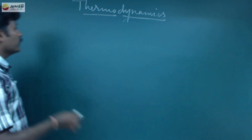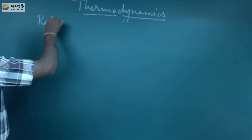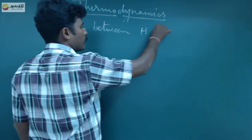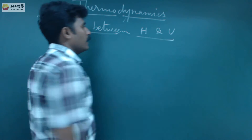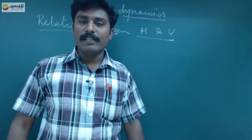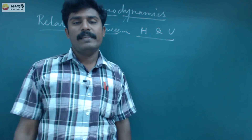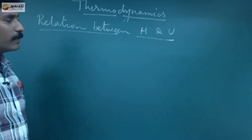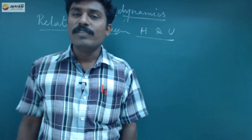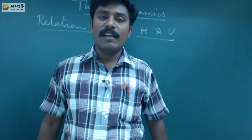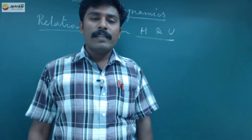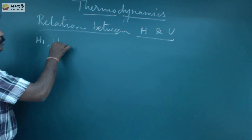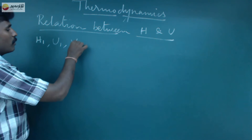The next topic: five questions on the relation between H and U. H means enthalpy, U means internal energy. Enthalpy means heat, U means internal energy. Now how are we going to relate H and U? First, when a system undergoes from initial to final state at constant pressure — initially enthalpy is H1, internal energy is U1, volume is V1.